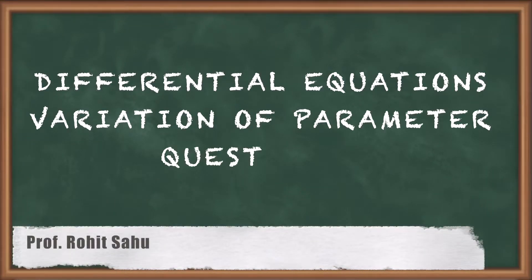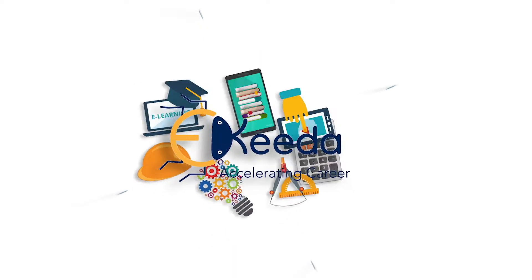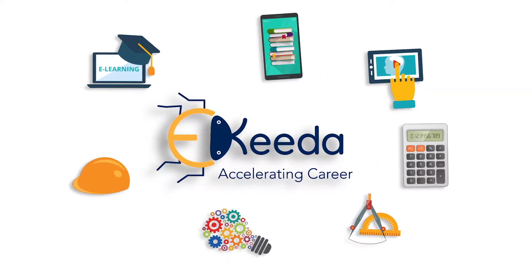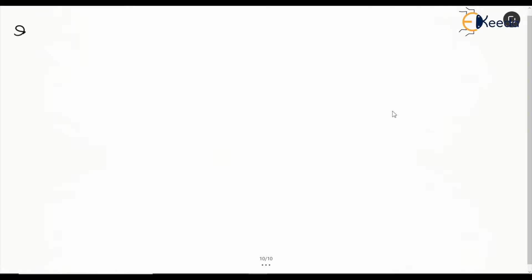Hello everyone. In this session we will see another question on solution by variation of parameters. It says: solve y double dash minus y equal to e to the power of x.